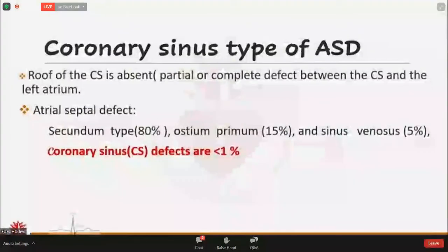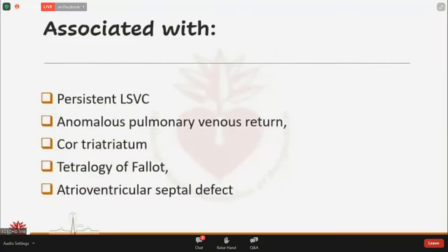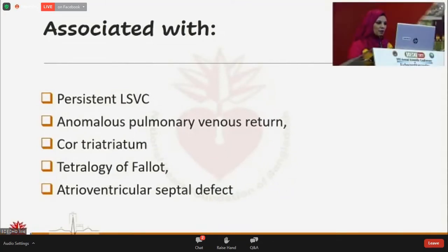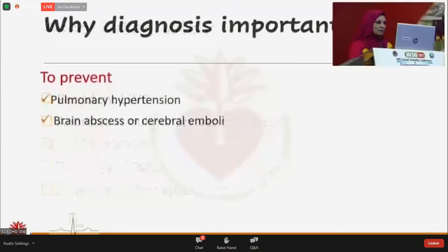Coronary sinus type of ASD is the partial or complete unroofing between the coronary sinus and the left atrium. It is very rare, accounting for less than one percent of all ASDs, and is associated with persistent left superior vena cava, anomalous pulmonary venous return, cor triatriatum, heterotaxy, and atrioventricular septal defect.